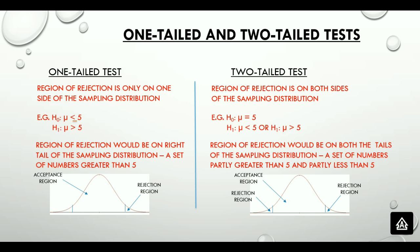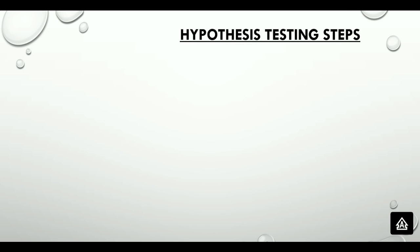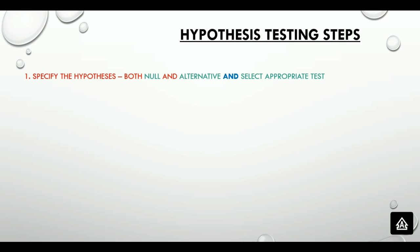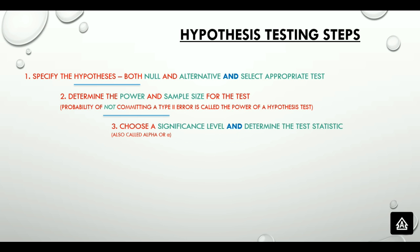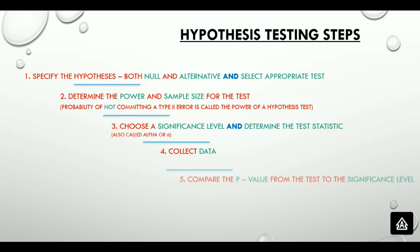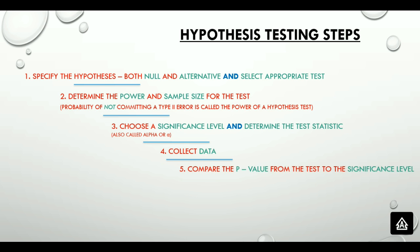Now we are equipped with the prerequisites to hypothesis testing. There are broadly six steps. First, specify the null and alternative hypotheses. Second, determine the power and sample size — the power being the probability of not committing a type 2 error. Third, choose a significance level or alpha level. Fourth, collect the data. Fifth, compare the p-value from the test to the significance level. And finally, decide whether to reject or fail to reject the null hypothesis.